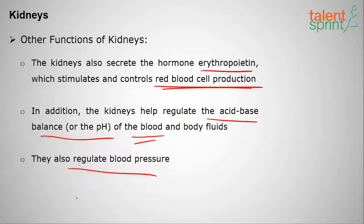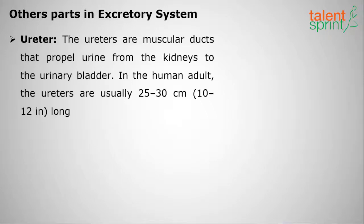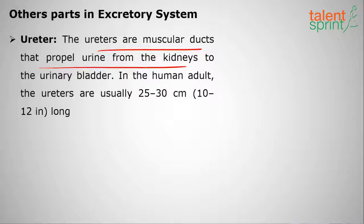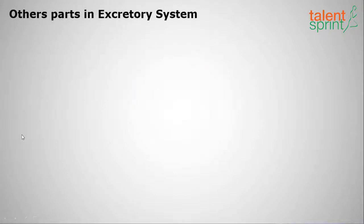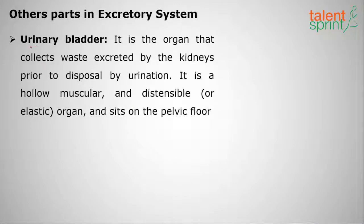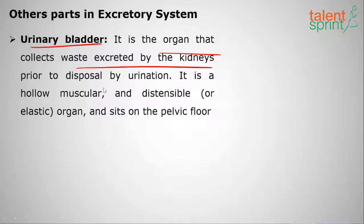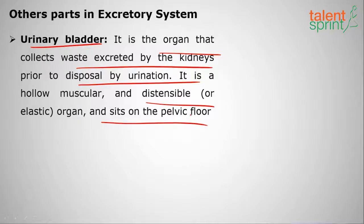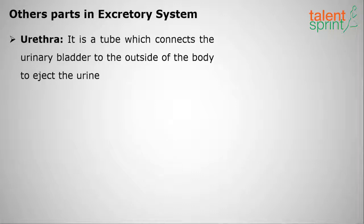The other parts of the excretory system: ureters are muscular ducts that propel urine from the kidneys to the urinary bladder. In adult humans, the ureters are 25 to 30 centimeters long. The urinary bladder is a hollow, muscular, and distensible organ that collects waste excreted by the kidneys, which travels through the ureters. It sits on the pelvic floor. The urethra is a tube that connects the urinary bladder to the outside of the body to eject the urine.